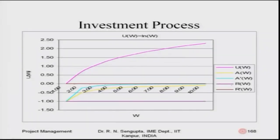Based on that, if I draw the curve, you have the utility function ln(w) in pink, the yellow and light greenish-blue curves represent a and a prime. Unfortunately, you do not have r prime drawn because it is zero — it would be a straight line along the x-axis. The r and r prime values are given accordingly.